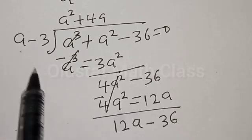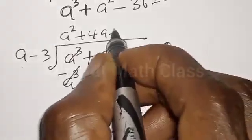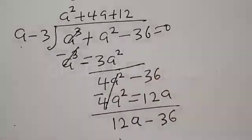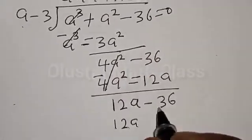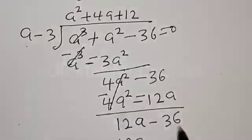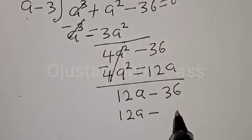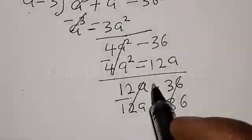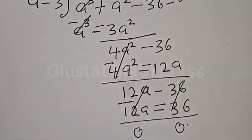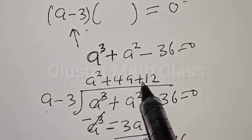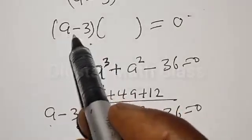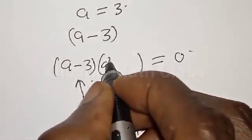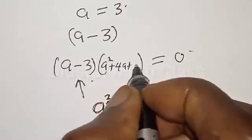Now let's divide again. A goes into 12a, giving us plus 12. This is the long division method. Then 12 times a gives 12a, and 12 times minus 3 gives minus 36. Multiplying by negative, this cancels and this cancels — we get 0 and 0. So we have the quotient a squared plus 4a plus 12, which is multiplied by the factor we found.